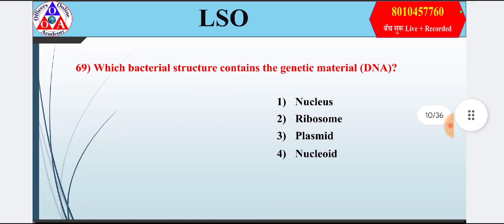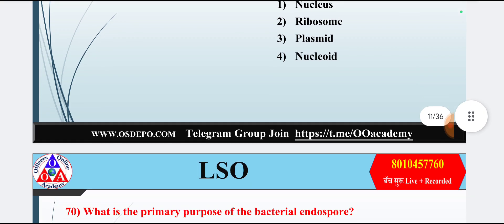Question 9: Which bacterial structure contains the genetic material DNA? Option 1: nucleus; option 2: ribosome; option 3: plasmid; option 4: nucleoid. Answer is option 4 — nucleoid.